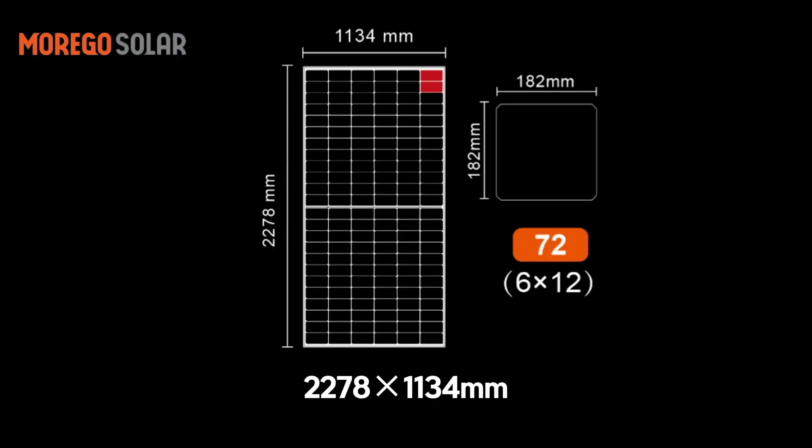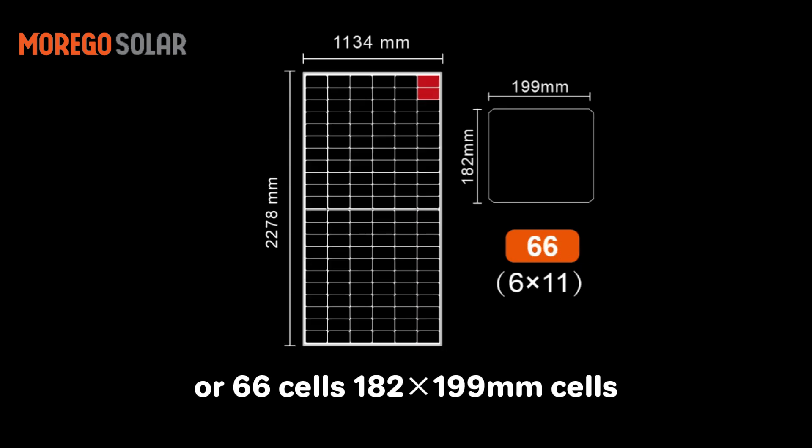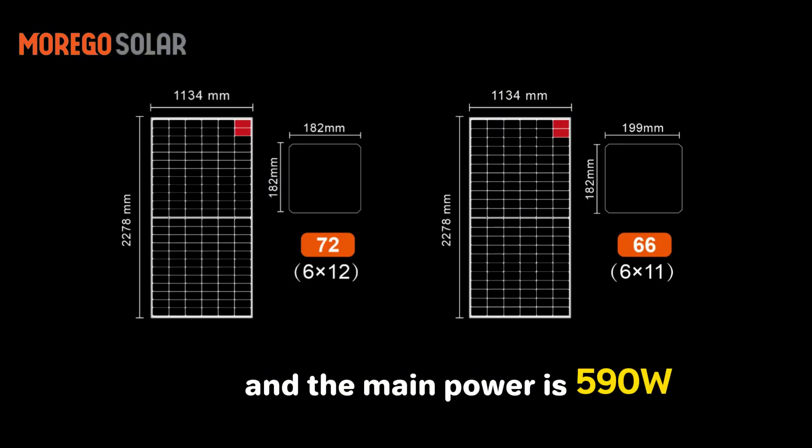2278×1134mm, which consists of 72 pieces of 182×182mm cells, or 66 pieces of 182×199mm cells, and the main power is 590 watts.